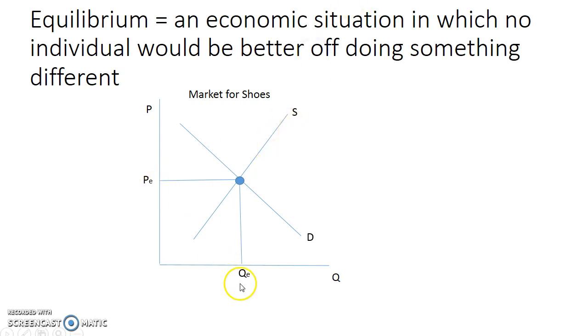I chose a subscript of E because this is for equilibrium - the equilibrium price and the equilibrium quantity.